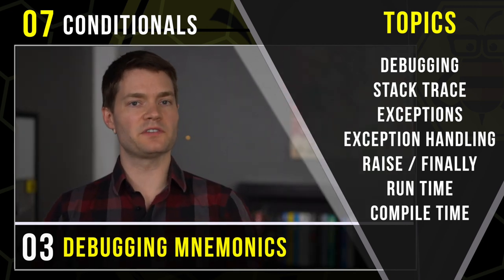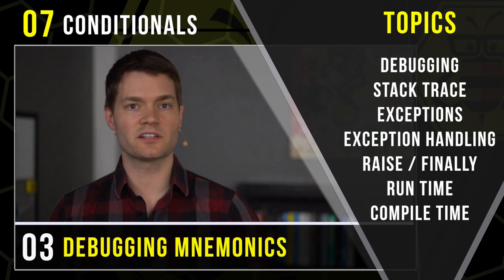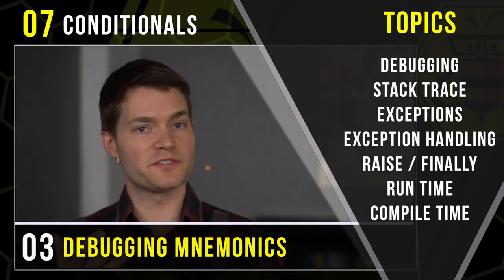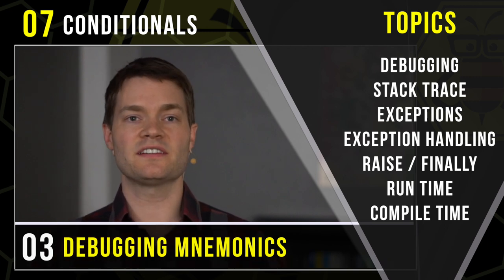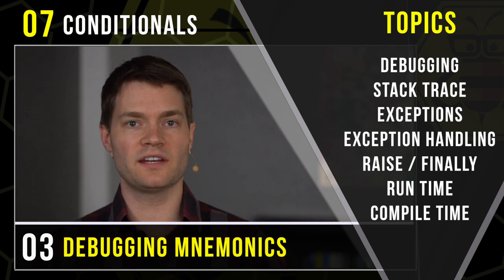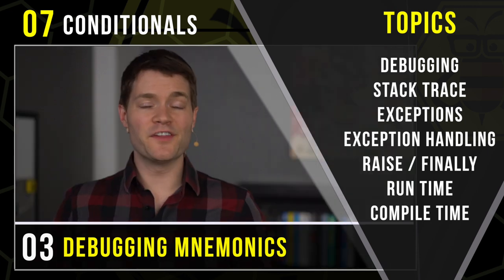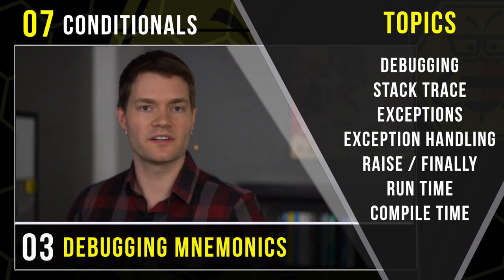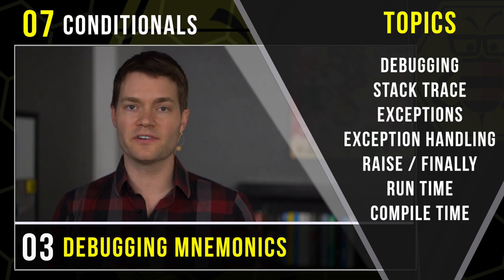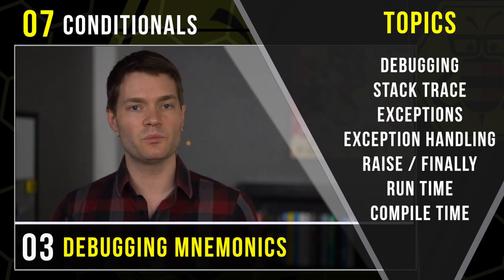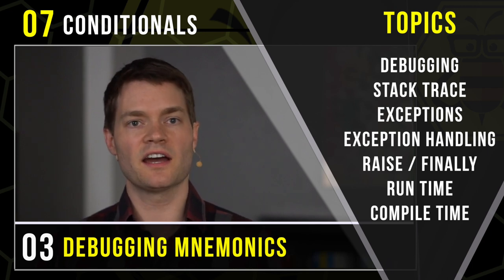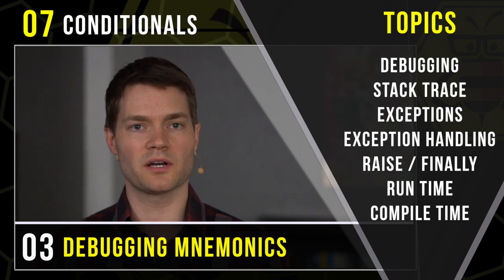Then we learned the mnemonic of China's big red flag, representing the topic of exceptions — which occur even when statements are written correctly and often relate to what's inside our variables. After that, we learned the mnemonic of a hand buzzer representing exception handling: the process of responding to unwanted actions during either compile time or runtime. Then we learned the mnemonic of a warrior princess raising her sword, representing the keywords raise — a way to override default exceptions to display information to users and other programmers — and finally, which lets us run a special block of code at the end of our file to disconnect from a server or close out a file.